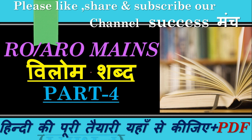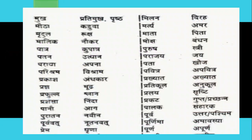Let's move on to part 4. Let's see what the words of today's part 4 are — the willom shabd. The first word is mukh. We will write its willom shabd: pratimukh or prest — both can be written. That is what we will write in the willom shabd.